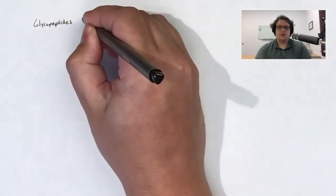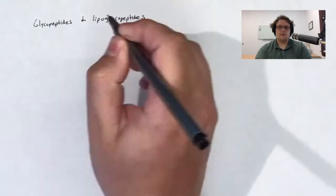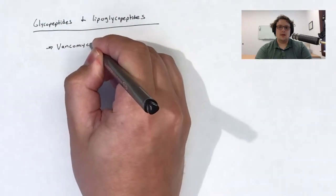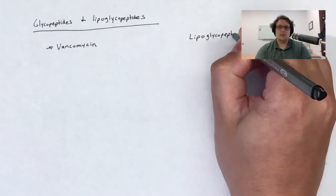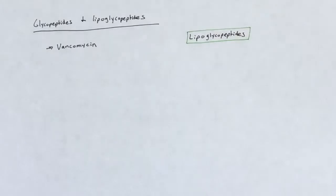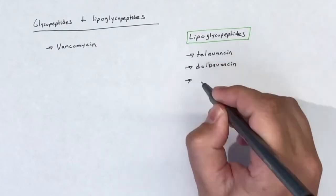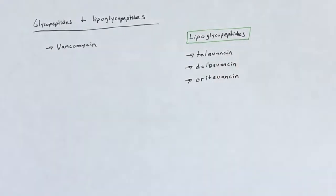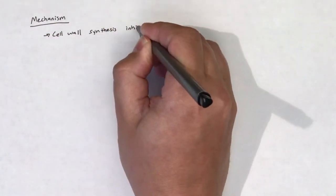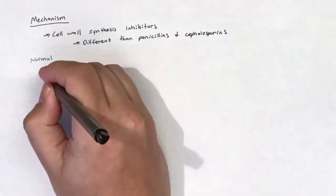The class originator here is the glycopeptide vancomycin. Other semi-synthetic compounds have been engineered off of vancomycin structure. These related compounds are called lipoglycopeptides and include the drugs telavancin, dalbavancin, and oritavancin. Glycopeptides and lipoglycopeptides work as cell wall synthesis inhibitors.